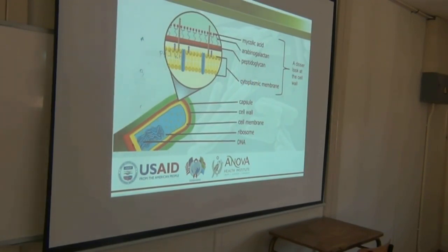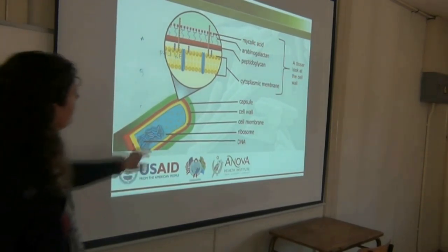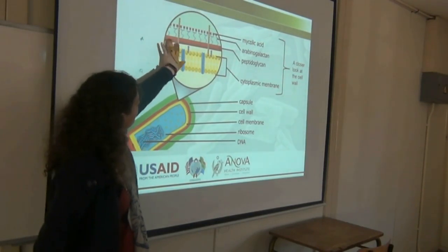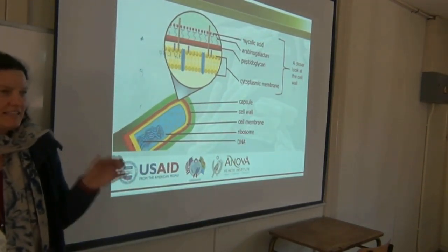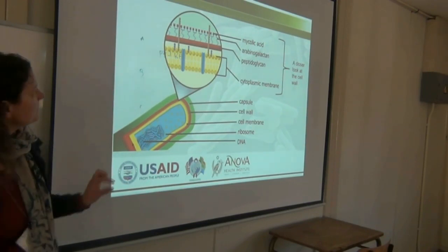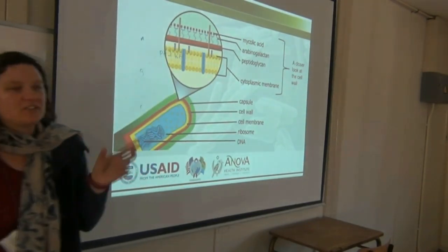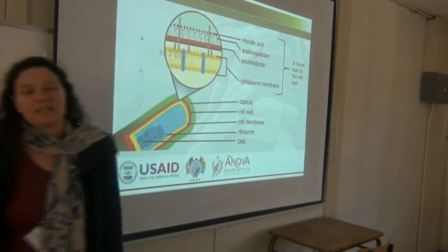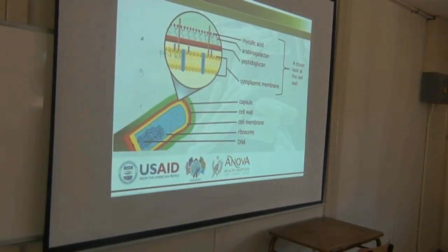Looking at the TB cell wall, there is the cell membrane on the inside, then a peptidoglycan layer — similar to your gram positive and negative bacteria. However, TB has got two extra layers: the arabinogalactan layer and the mycolic acid layer. So in addition to the peptidoglycan layer that most bacteria have, TB has two extra protective layers.